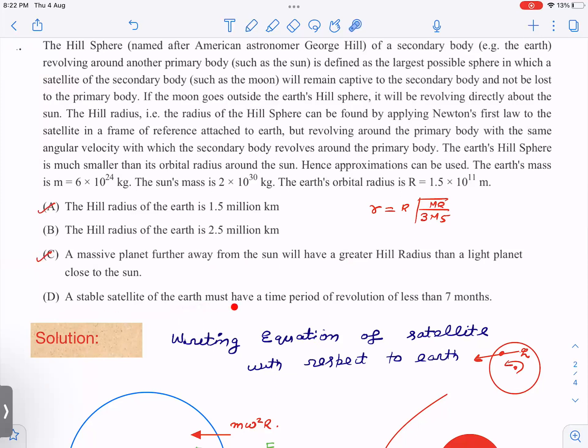Then a stable satellite of Earth must have a time period of revolution less than seven months. In the borderline case, we assume there is a satellite of Earth revolving just at the edge of the Hill sphere. If we take this as r and use the formula T = 2π r^(3/2) / √(G Me), because it is a satellite of Earth, you are going to get seven months. I'm leaving this for you to verify. So option D is also correct.